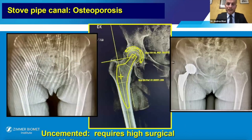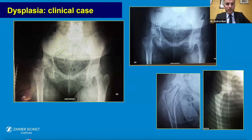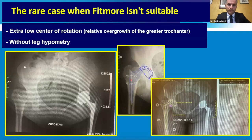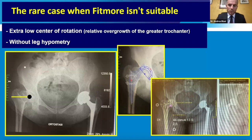This is a stovepipe canal, very frequent in osteoporosis — we can solve it using Fit More AM, but osteoporosis requires high surgical sensitivity. We can also solve dysplasia cases, which require attentive preoperative planning. Fit More AM is not suitable when we have an extra low center of rotation without leg length symmetry; in that situation, we must choose a different implant to solve the joint.